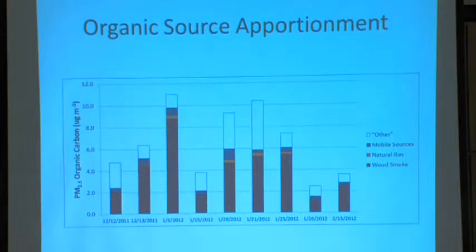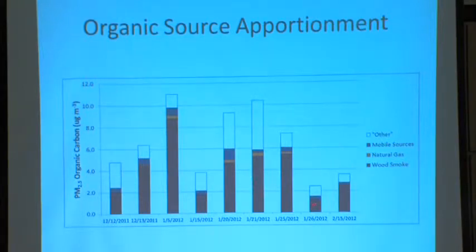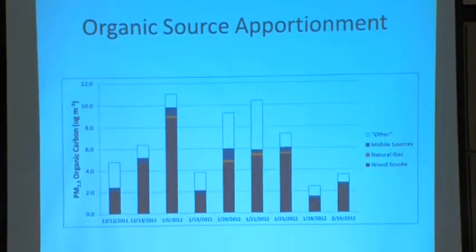We were able to identify three primary sources of organic pollutants in our samples: wood smoke, natural gas combustion, and mobile sources — a mixture of cars and possibly snowmobiles, though our model couldn't distinguish between those two. They were relatively minor because most of the pollution here is these maroon bars, which is wood smoke. We also have white bars representing things we couldn't identify — either sources we didn't know were there, or secondary pollutants created in the atmosphere. This model gives us an idea of how much those secondary pollutants contribute to air pollution on those days.